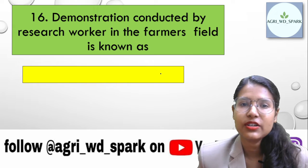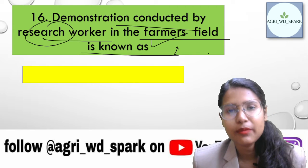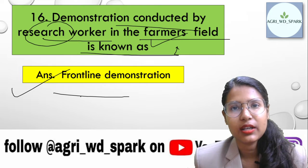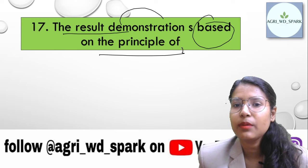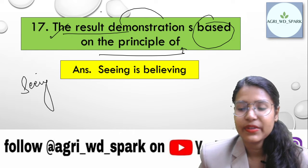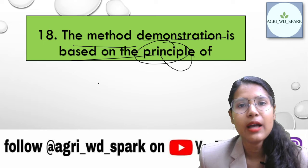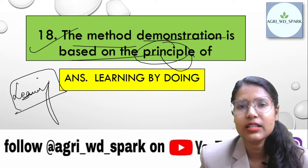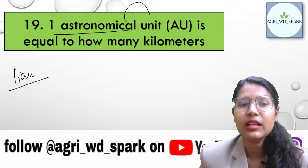A demonstration conducted by a research worker in a farmer's field is called a frontline demonstration. The result demonstration is based on the principle of 'seeing is believing,' while the method demonstration is based on the principle of 'learning by doing.'